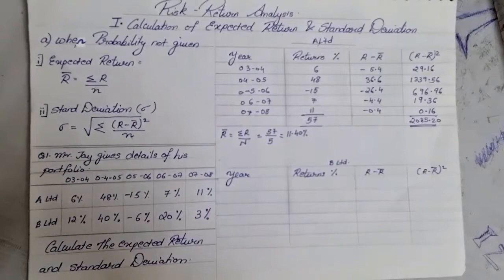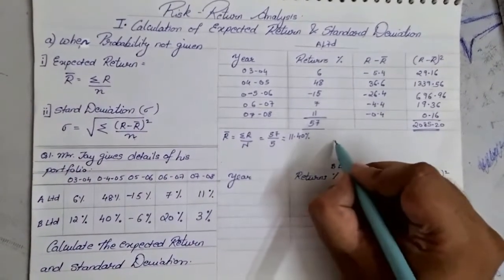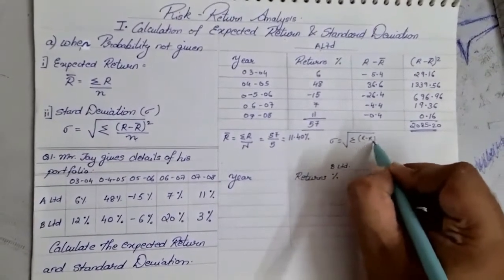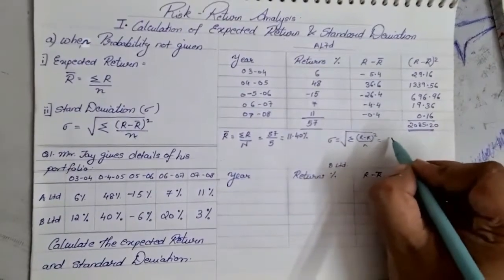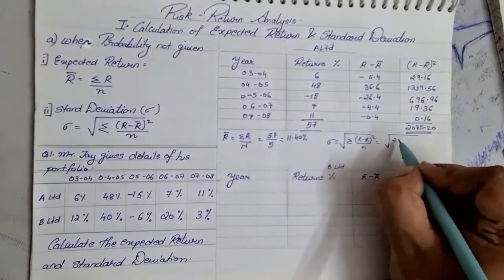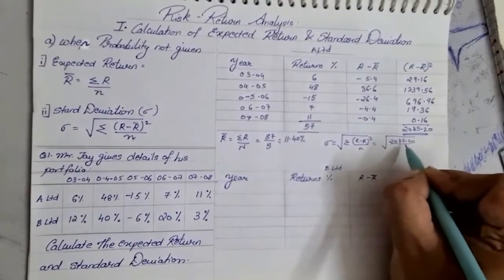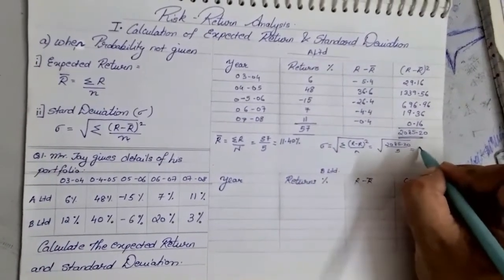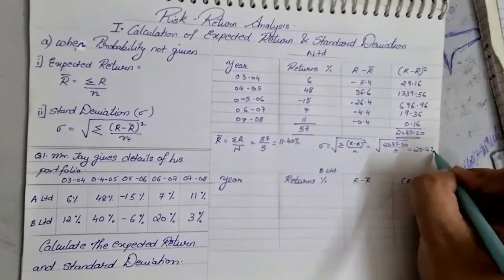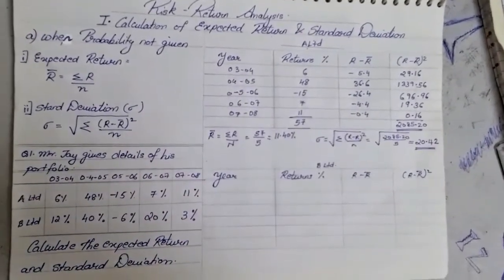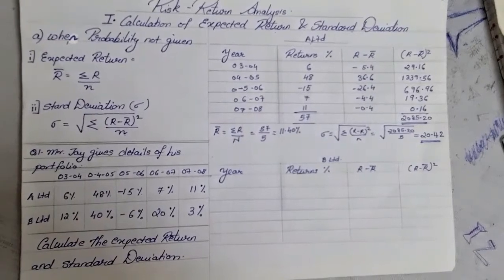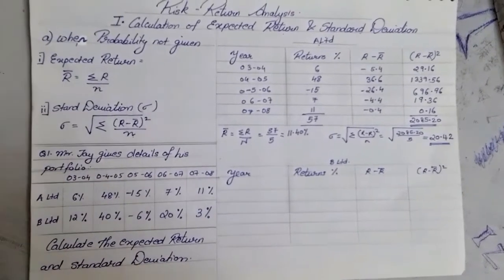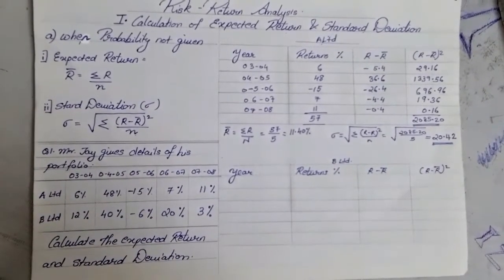Now let us find the standard deviation. The formula is the root of sigma (R minus R-bar) squared upon N, which gives us the root of 2085.20 upon 5. Dividing and pressing the square root gives a final answer of 20.42%. So for A Limited, the expected return is 11.4% and the standard deviation is 20.42%.